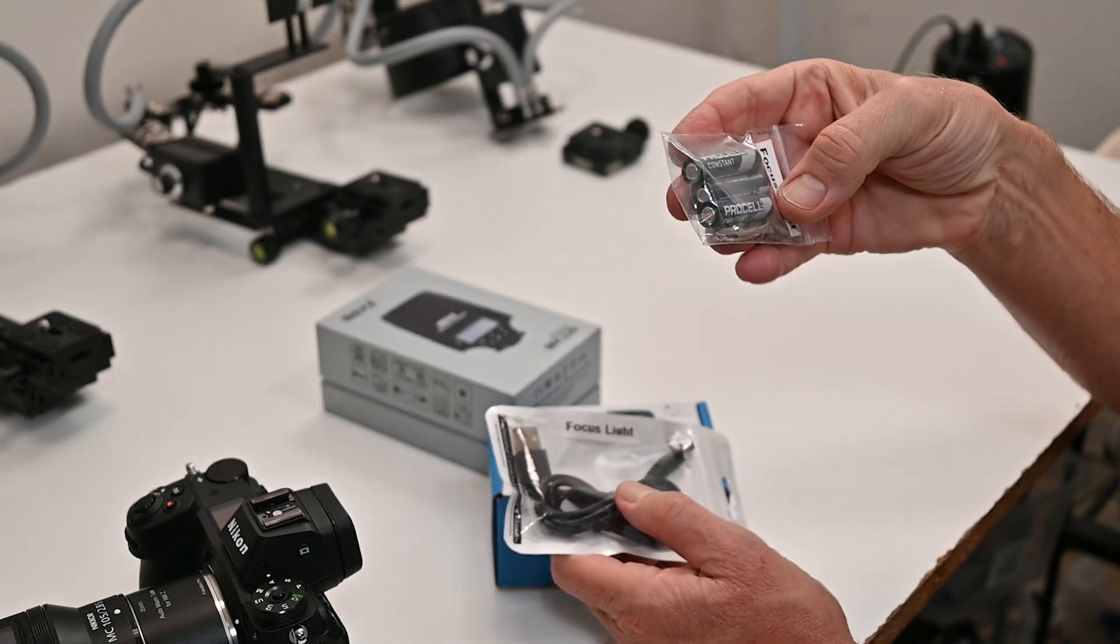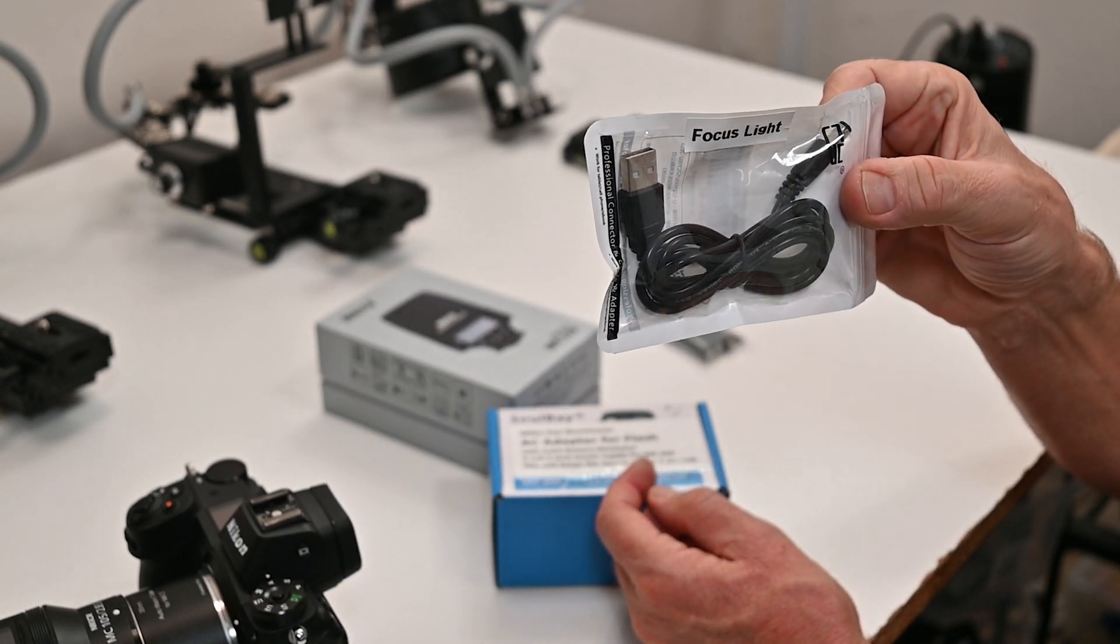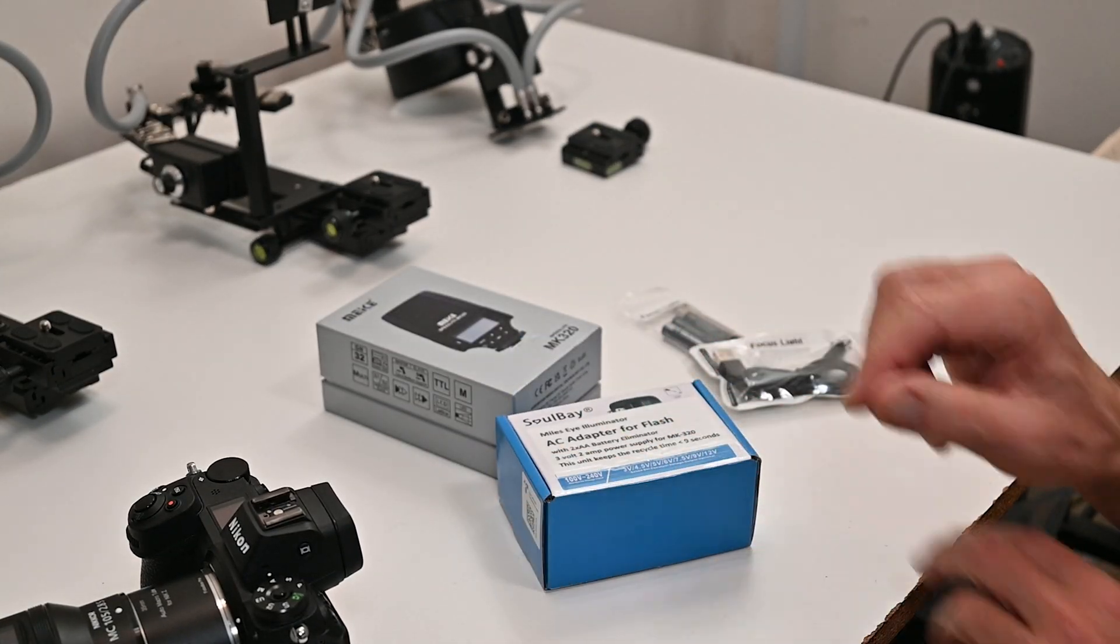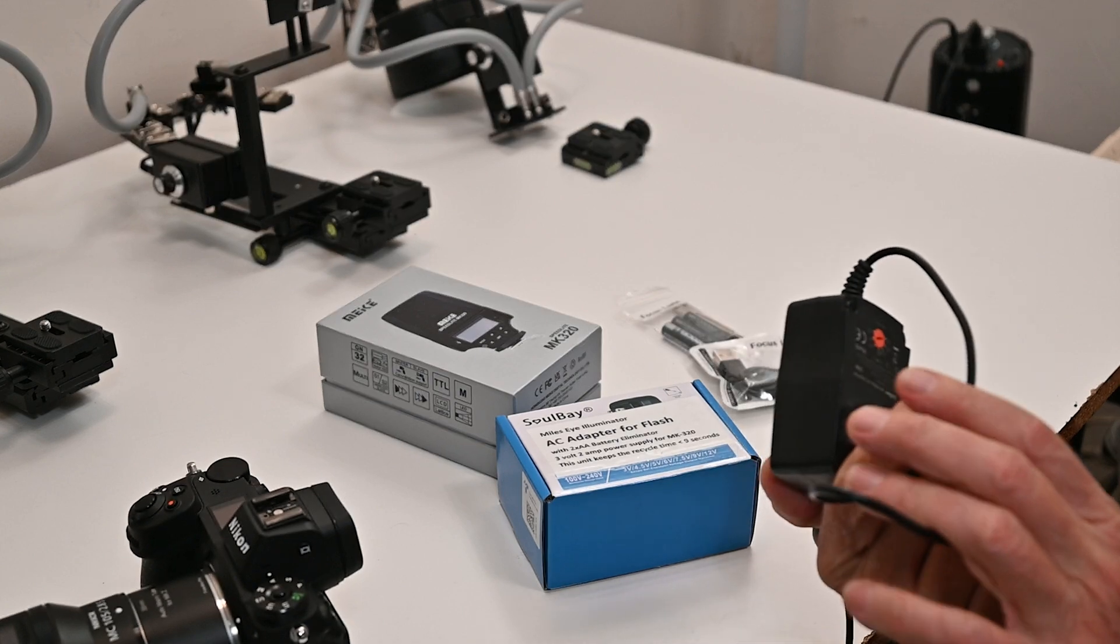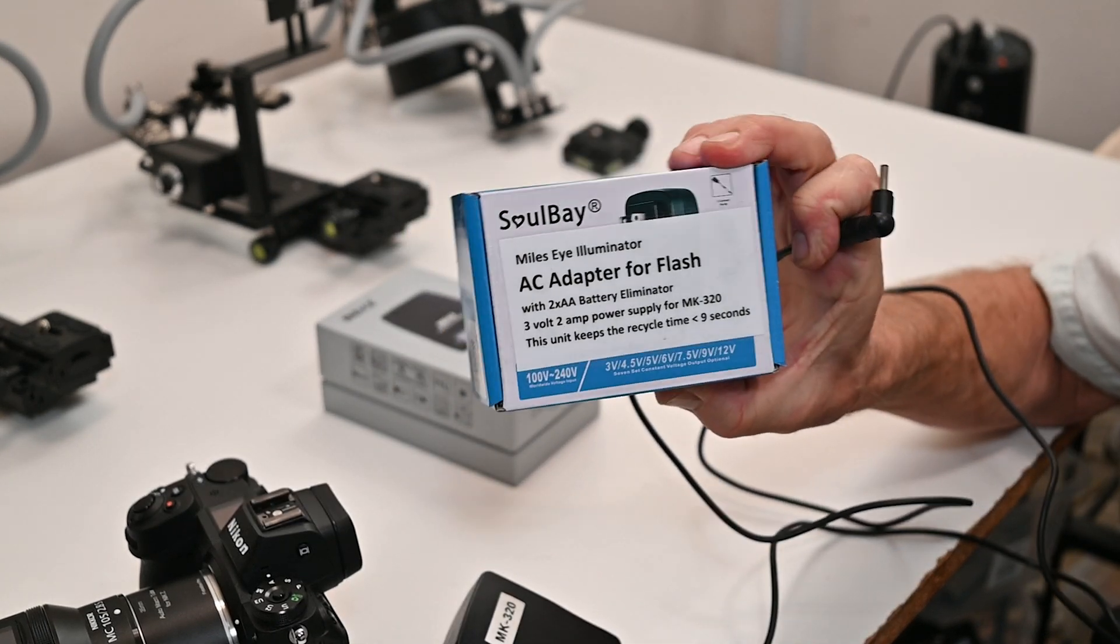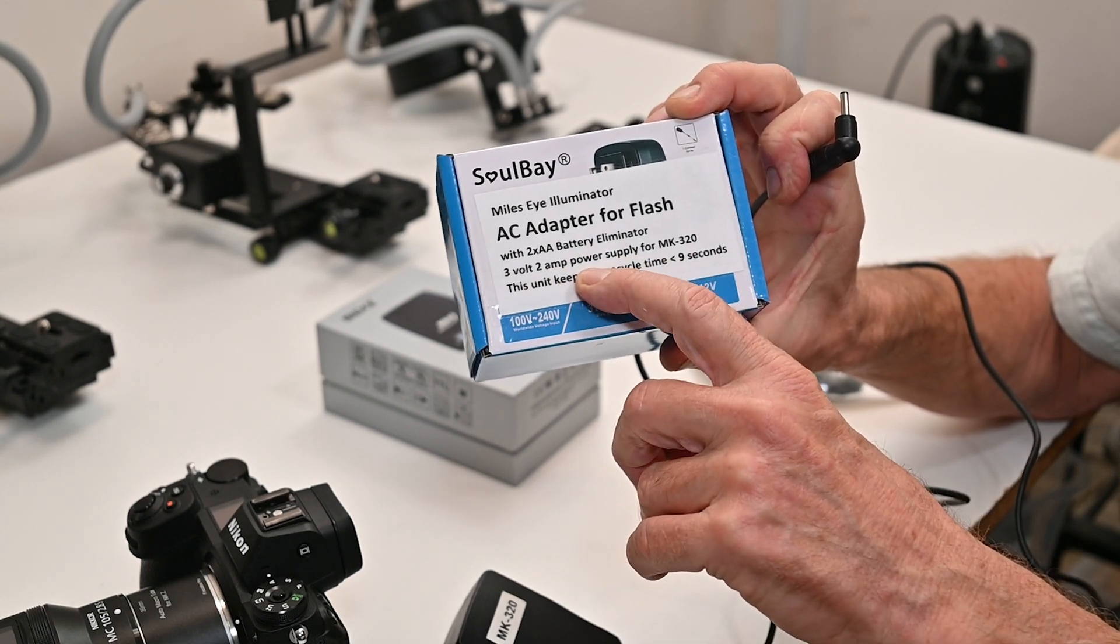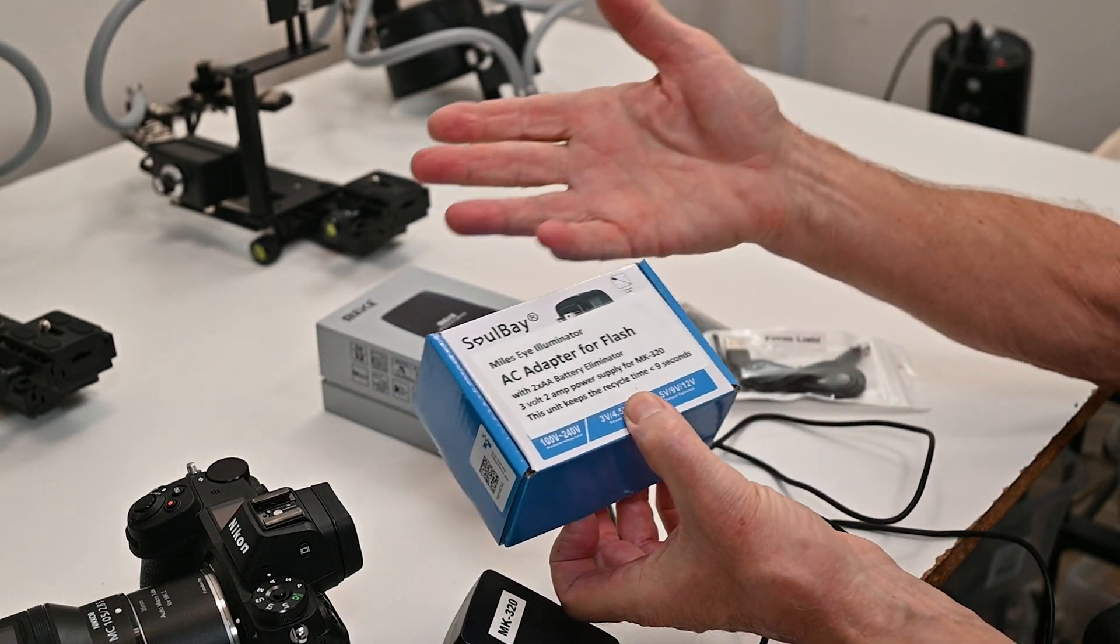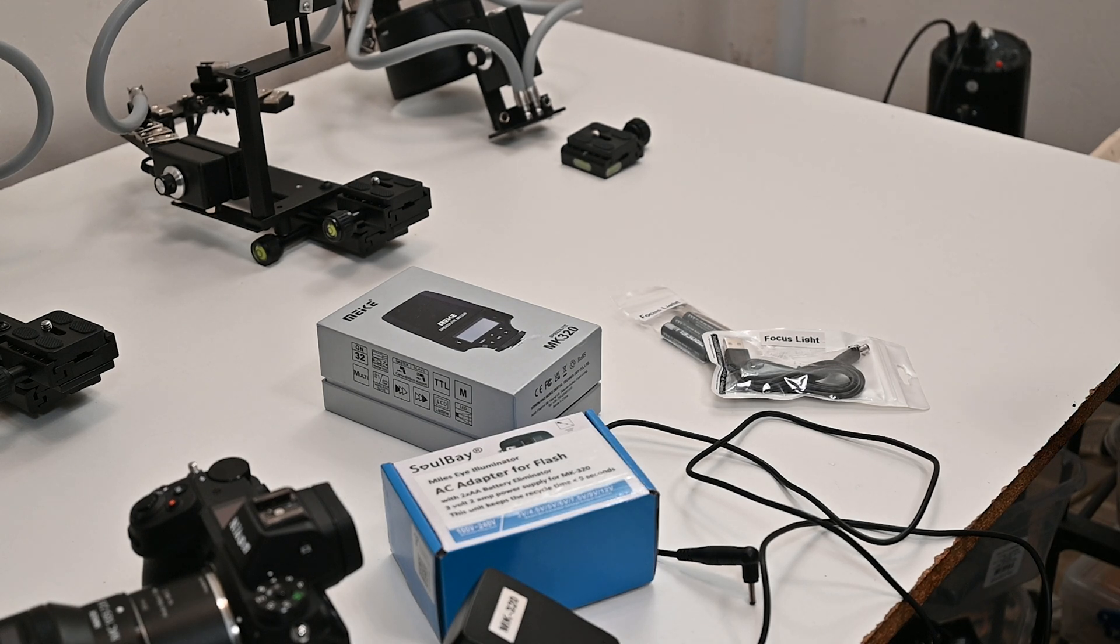I can zoom in here. The illuminator also includes spare batteries for the focusing light and a screwdriver to open the battery compartment. An alternate source of powering the focusing light is USB, and the transformer that is supplied also has a USB port. It's designed to work with the flash, and it's important to use an adapter. This is a two amp power supply and it keeps the recycle time down below nine seconds or so.